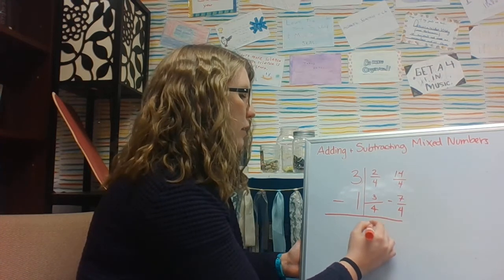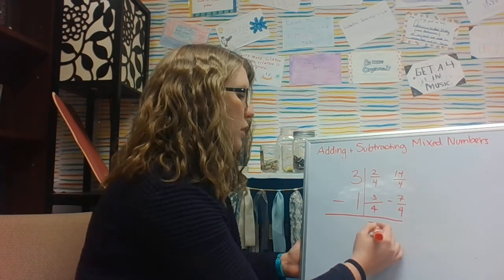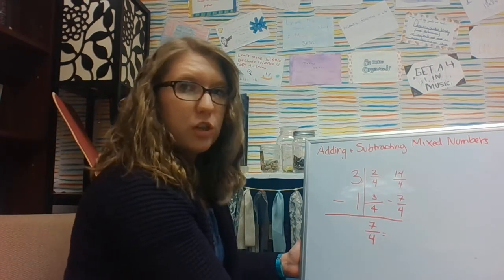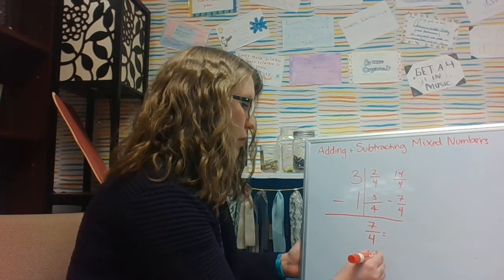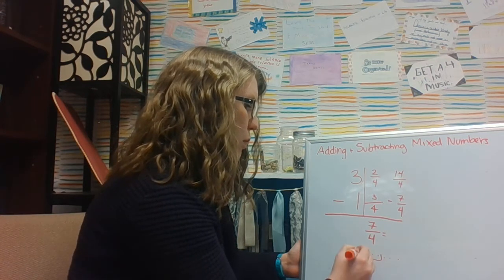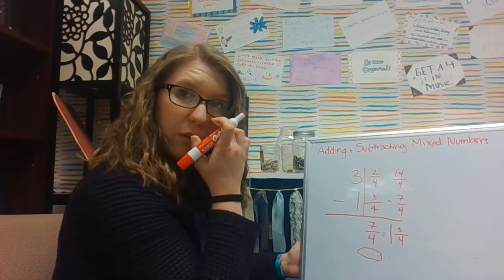Now I have 7/4 as my answer because 14 minus 7 equals 7. And now I just need to change it back into a mixed number. So I can see that I have 1, 2, 3, 4, 5, 6, 7. Four of those become a whole, and then I have 3/4 left over.